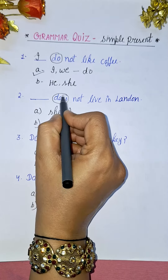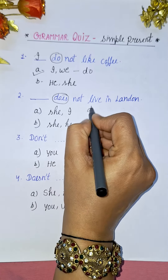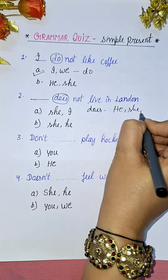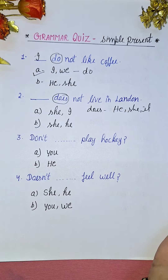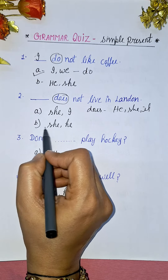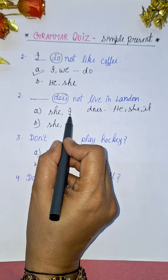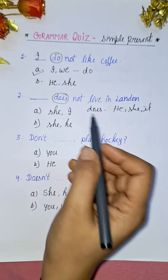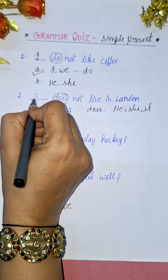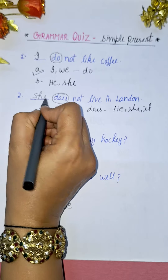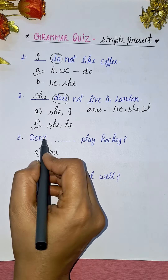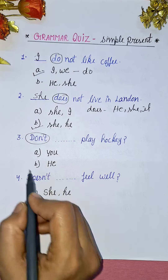Next question: dash 'does not live in London'. The keyword here is 'does'. With 'does', we use singular subjects — he, she, it, and all singulars. So the right options are 'she' and 'he'. For example: 'She does not live in London' or 'He does not live in London.'